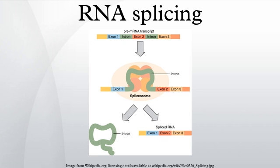Trans-splicing is a form of splicing that joins two exons that are not within the same RNA transcript. Self-splicing occurs for rare introns that form a ribozyme, performing the functions of the spliceosome by RNA alone. There are three kinds of self-splicing introns: Group I, Group II, and Group III. Group I and II introns perform splicing similar to the spliceosome without requiring any protein. This similarity suggests that Group I and II introns may be evolutionarily related to the spliceosome. Self-splicing may also be very ancient, and may have existed in an RNA world present before protein.